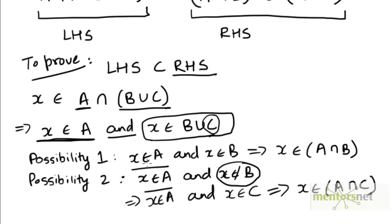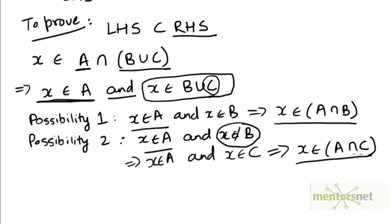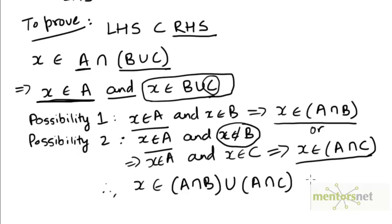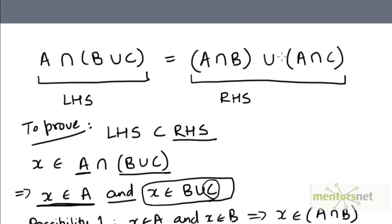So these are the two possibilities: either x belongs to A intersection B, or x belongs to A intersection C. One of these two possibilities must be true. So if we take the union of these two sets, x must belong to their union. If x belongs to this set or x belongs to this set, x must belong to their union — and this is the set on the right hand side, A intersection B union A intersection C. So we have proven that the left hand side is a subset of the right hand side.